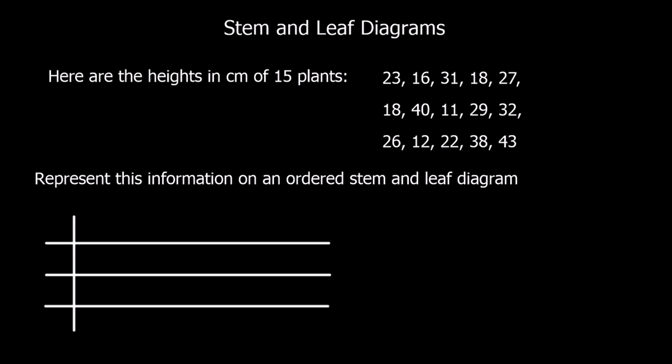Here we're going to draw a stem and leaf diagram. In a stem and leaf diagram, we separate the tens and the units. The tens go in this bit on the left - the stem - and then the units become the leaves.